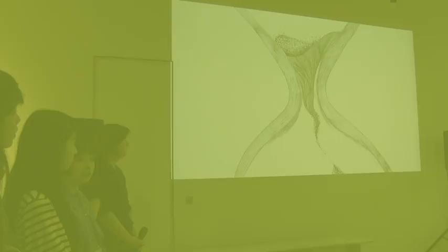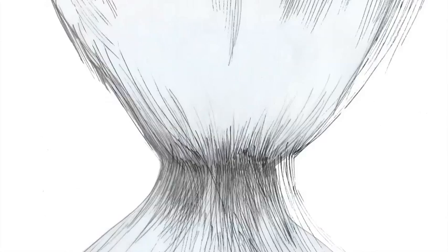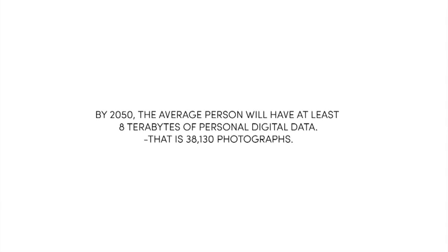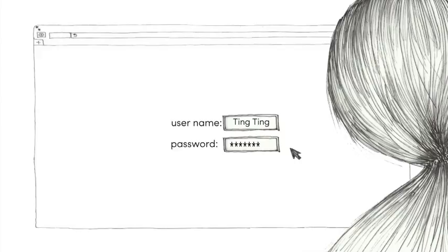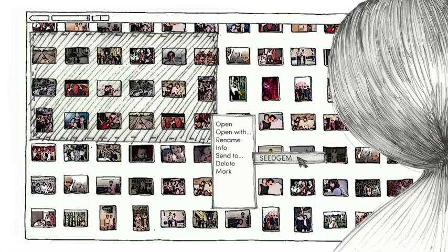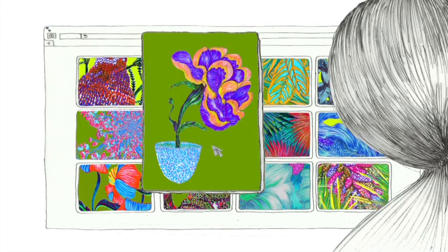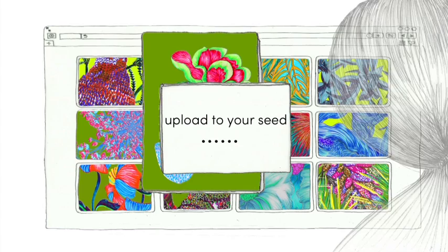Our memories are fragile, like footsteps washed away by the sands of time. By 2050, the average person will have at least eight terabytes of personal digital data. What if you could preserve these memories beyond a single lifetime? Welcome to a world of eternal possibility, only a click away. Treasured moments are easily uploaded to the seed gem server, where seeds are used to record digital memories encoded in plant DNA.